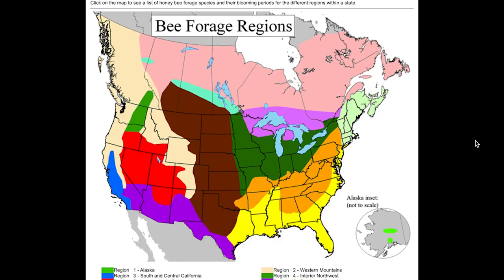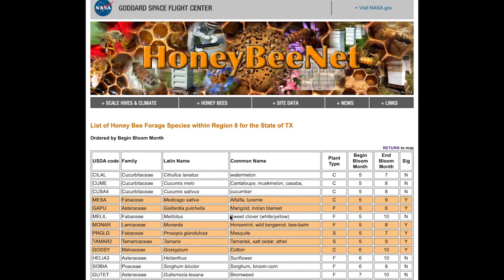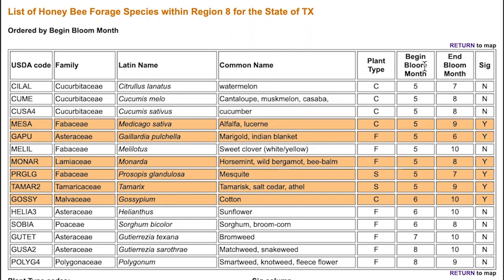The next resource I'm going to share is actually from, of all places, NASA. NASA puts together an actual map with information about plants, floral resources, and trees that are significant producers of honey in each of the regions around the United States. If you visit the link in the description, it'll take you to these bee foraging regions. Once you know roughly where you are on the map, you can drill into that specific area and see a list of plants and trees in your area, along with when they're expected in a normal year to begin and end blooming, and whether they are a significant contributor of honey in your particular area.